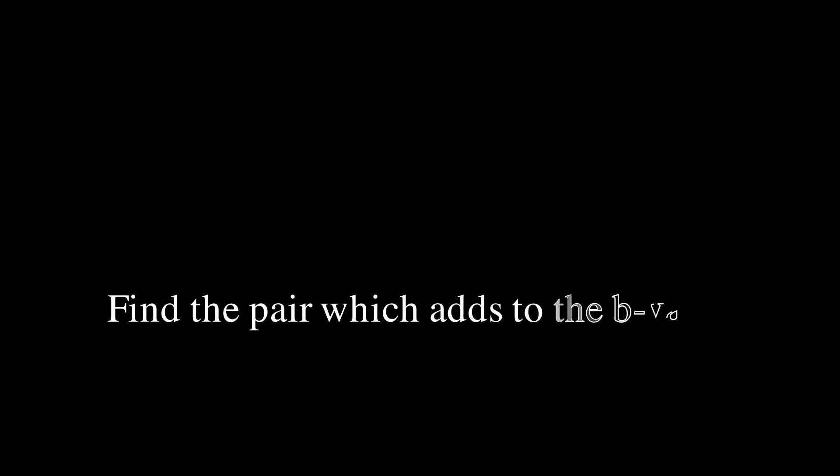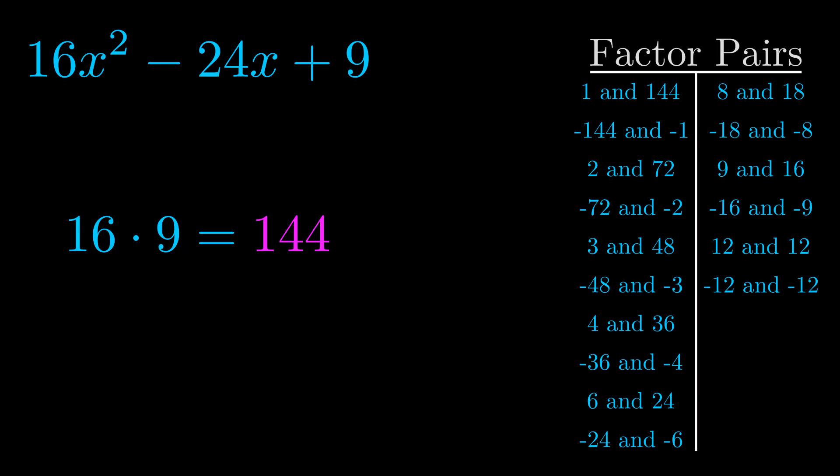The b value is the coefficient on the x term. That's the middle term, the one that we haven't done anything with yet. And really this is the only factor pair that we need.